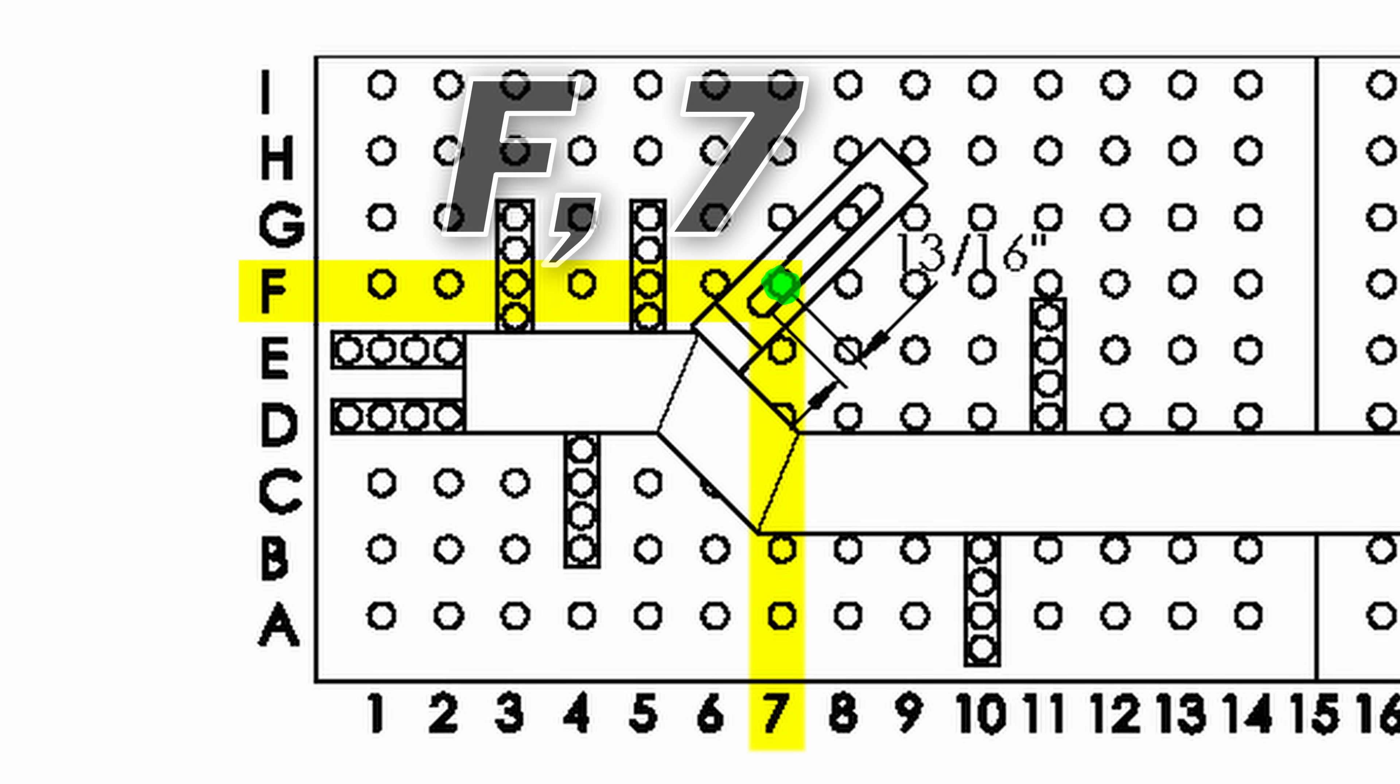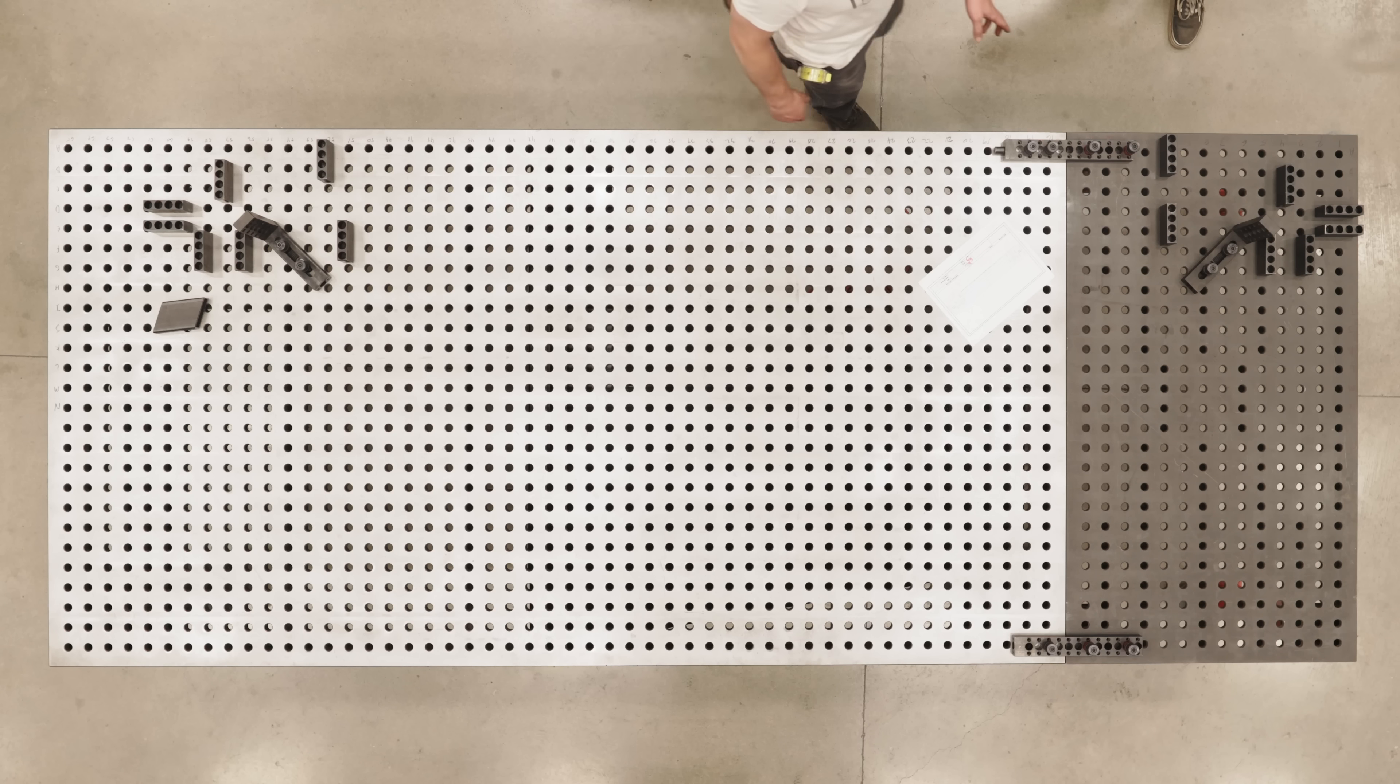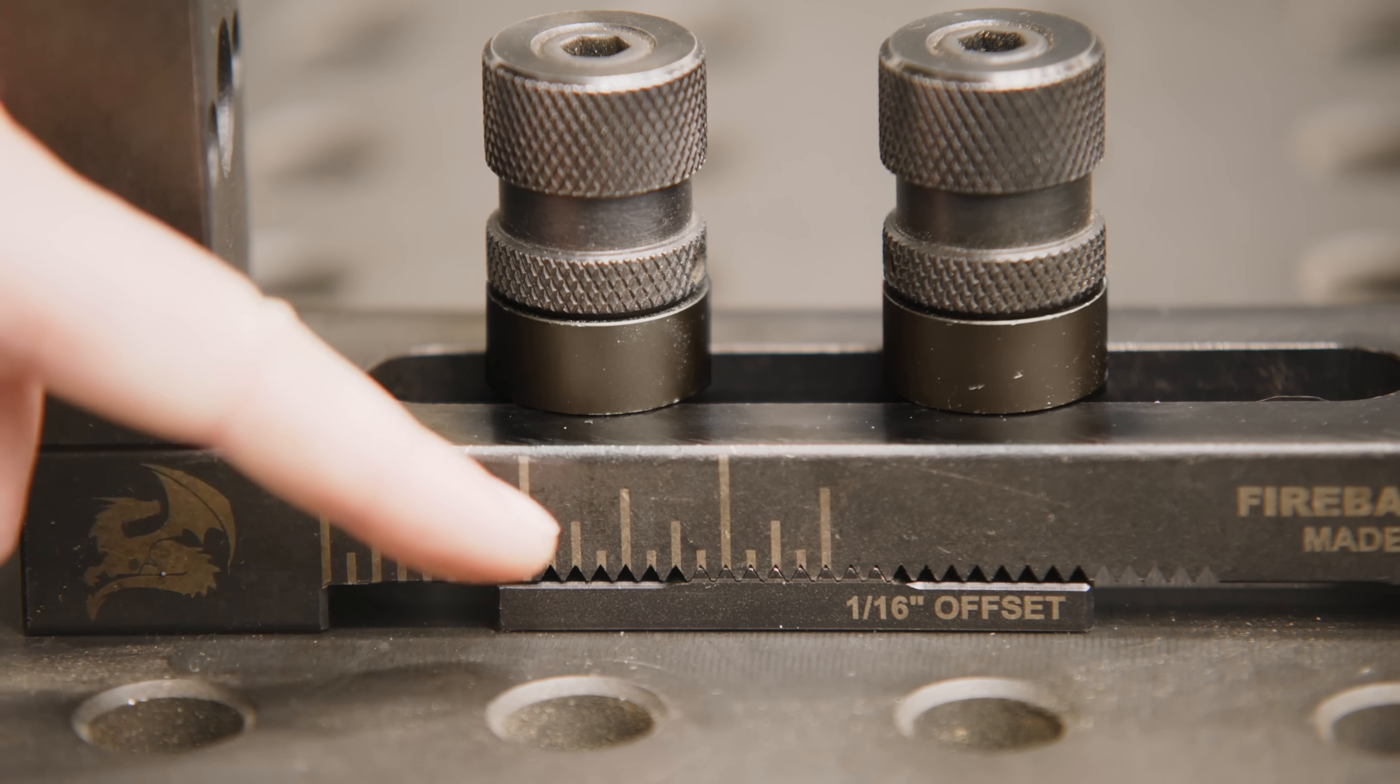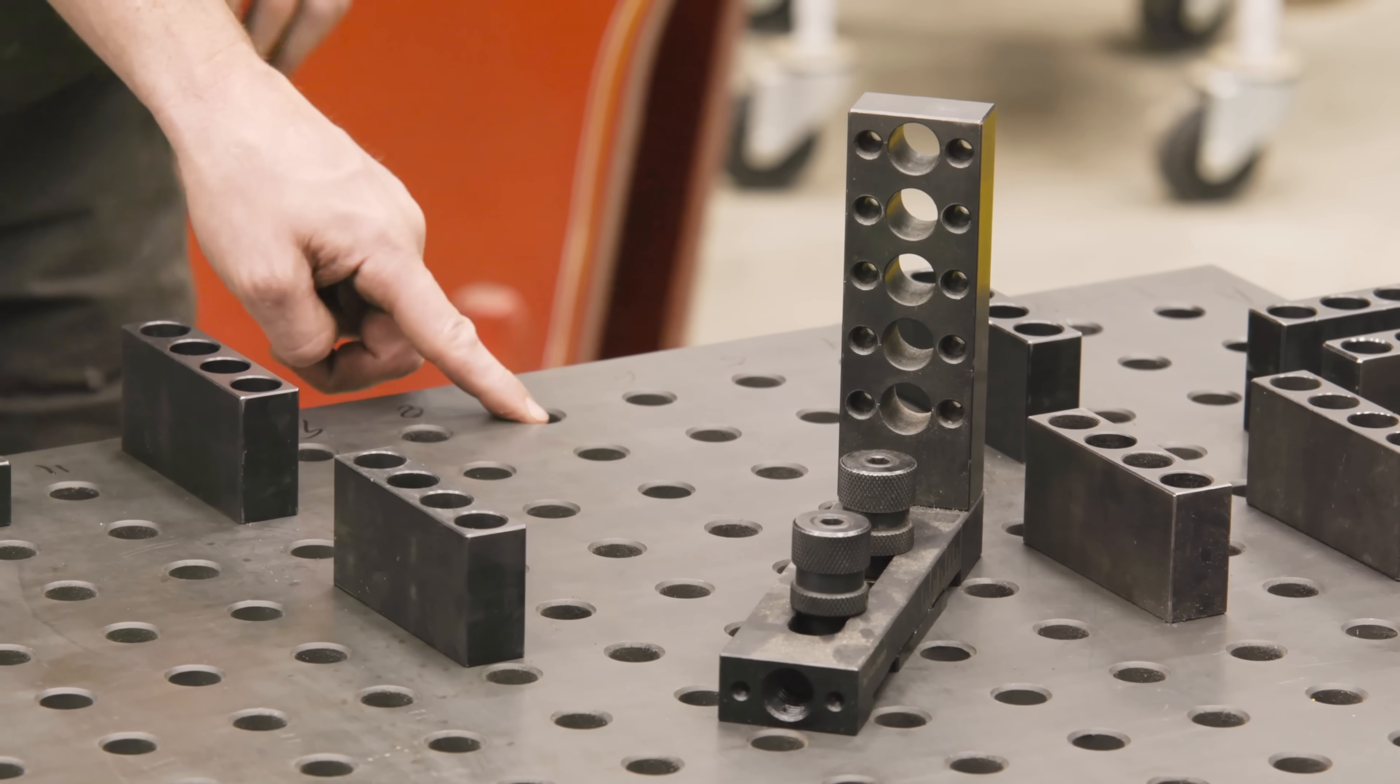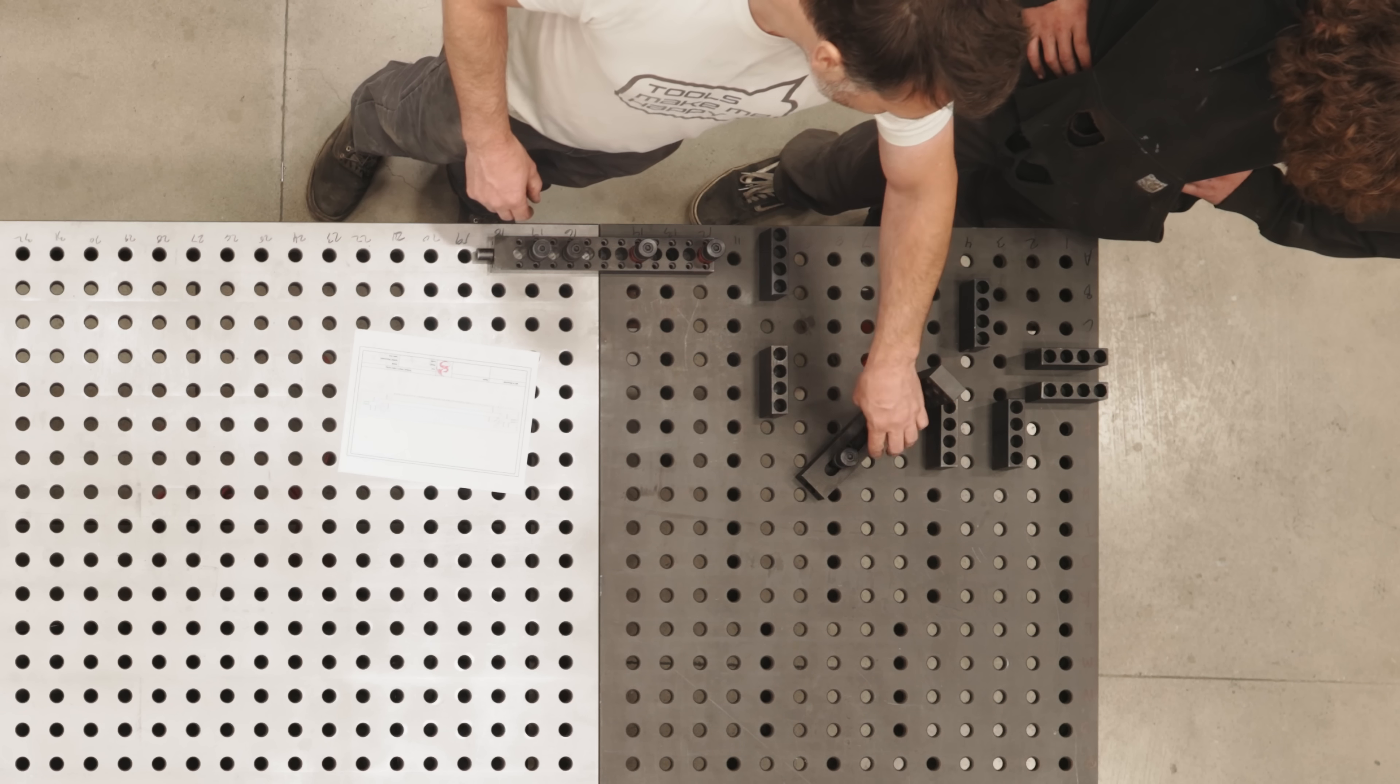Right here at F7. The neat thing about this system is I can just come up here and visually inspect. I can say it looks like you're on 13 sixteenth. I can look over here. You're in seven. Are you in the right hole? F. Boom. You got it.